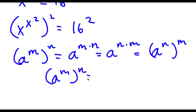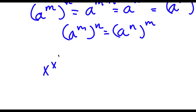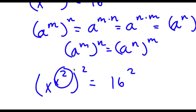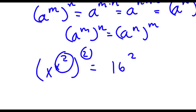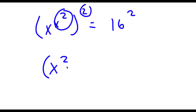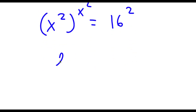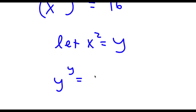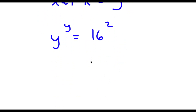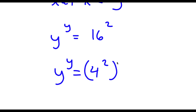In simpler terms, a to the power of m to the power of n equals a to the power of n to the power of m. So here we have x to the power of x to the power of 2 to the power of 2. We can think of x to the power of 2 as m and 2 as n, so switching these gives x to the power of 2 to the power of x to the power of 2, which equals 16 to the power of 2. Now I'll let x to the power of 2 equal the variable y. So I have y to the power of y equals 16 to the power of 2. Now 16 is the same thing as 4 to the power of 2, so I have y to the power of y equals 4 to the power of 2 to the power of 2.